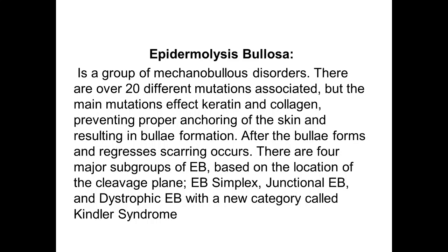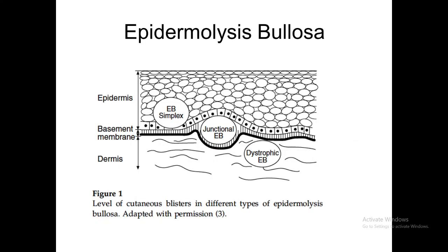This disruption leads to a space causing accumulation of fluid, and eventually a blister will be formed. There are four major subgroups within epidermolysis bullosa: epidermolysis bullosa simplex, junctional epidermolysis bullosa, dystrophic epidermolysis bullosa, and a new category called Kindler syndrome. We divide these diseases depending on the level of disruption and level of bulla formation.